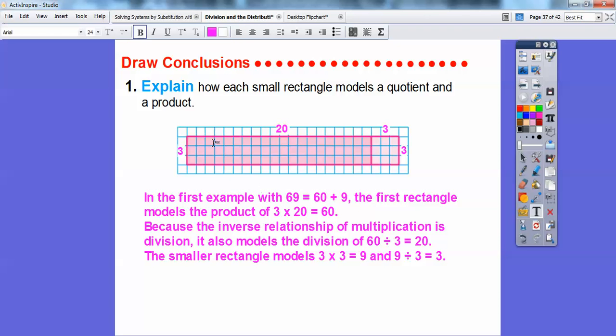And then the smaller rectangle represents 3 times 3, which is 9. This should be 9, not 0. So this is 60 divided by 3. Just think of this: this number divided by 3 is 2 with a 0, so 20. This number divided by 3 is 3, so 20 plus 3 right there. So that's what this model represents right there.